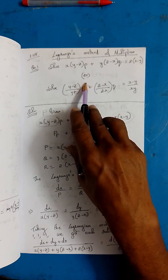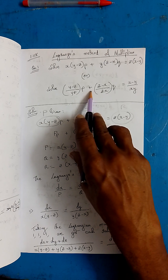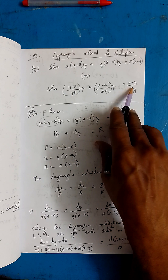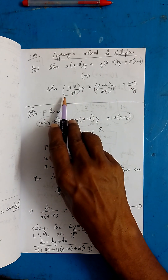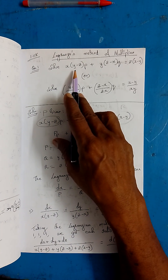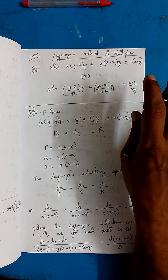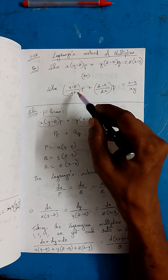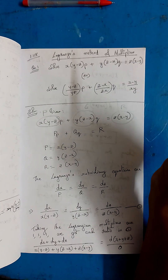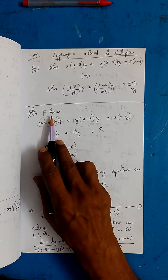The same question can also appear in this form: (y−z)/(yz) · p + (z−x)/(zx) · q = (x−y)/(xy). If you multiply this equation throughout by xyz, you get the previous form. So both questions are the same. If given in the second form, multiply throughout by xyz to get the standard form.